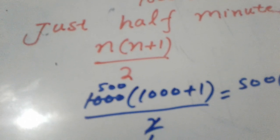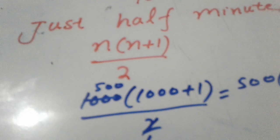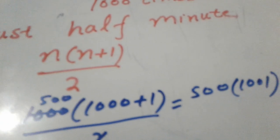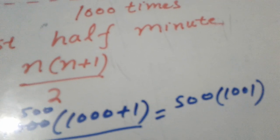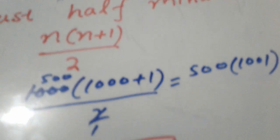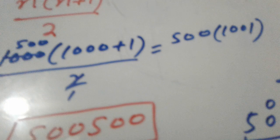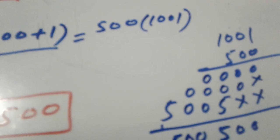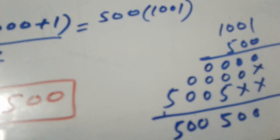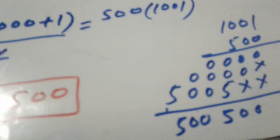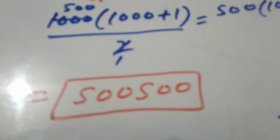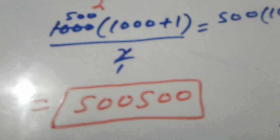We will simplify: divided by two gives 500(1000+1). We will multiply 500 with 1001. So the multiplication: 1001 multiplied by 500. The answer is five lakh five hundred, which is 500,500.